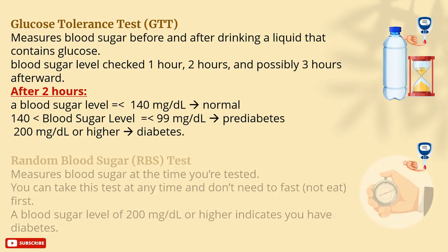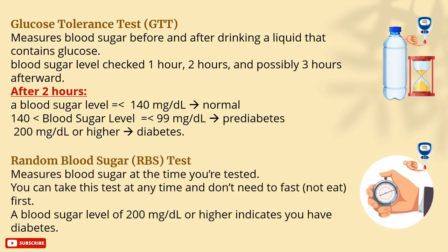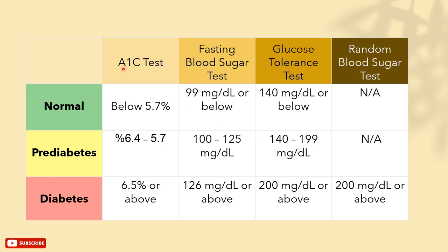The fourth and last test is the random blood glucose test. It measures blood sugar at any time — specifically at the time you are tested — and you don't need to fast before it. A blood sugar level equal to or higher than 200 mg/dL indicates diabetes. Here is a table of all four tests explained with their normal, pre-diabetic, and diabetic values.